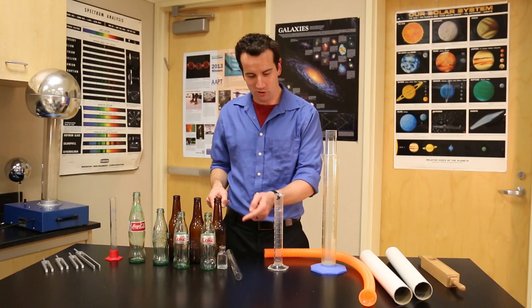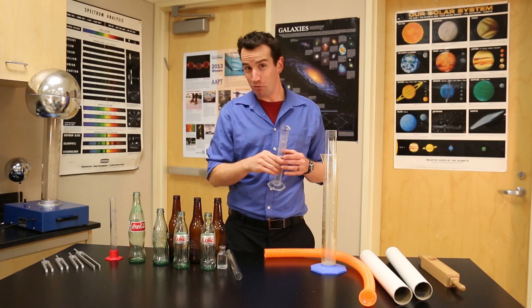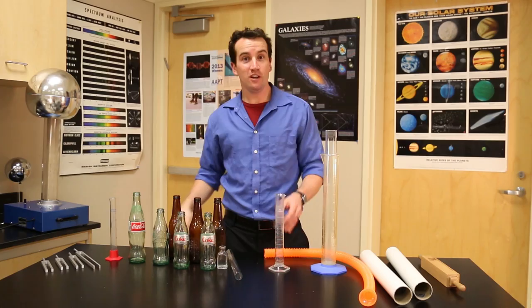Take a bottle or a tube or a cylinder and blow air over the top. It will resonate. And from this you can measure the wavelength of sound. And if you know the frequency, you can also measure the speed of sound.